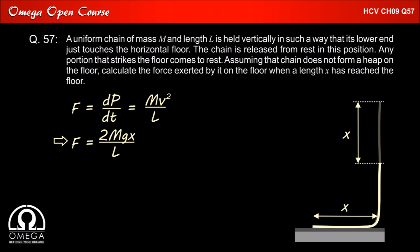Since the value of speed is √(2gX), F becomes 2MgX/L. Now the net force is equal to F plus weight. Thus, F_net = 2MgX/L + MgX/L = 3MgX/L. This is our answer.